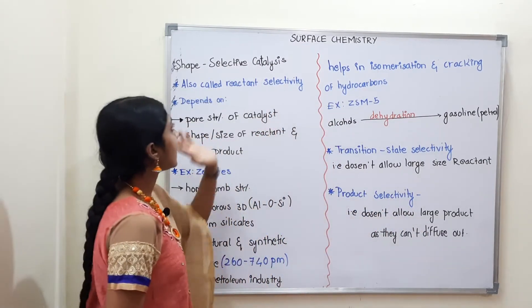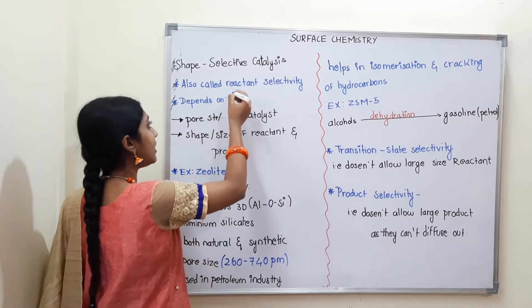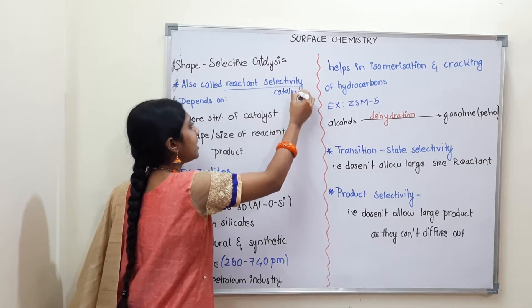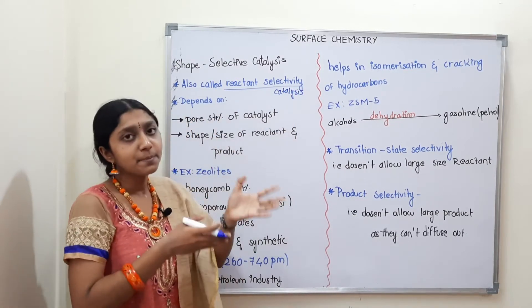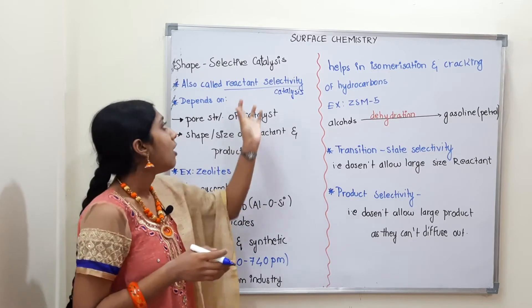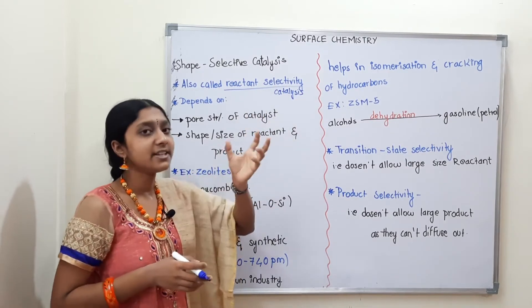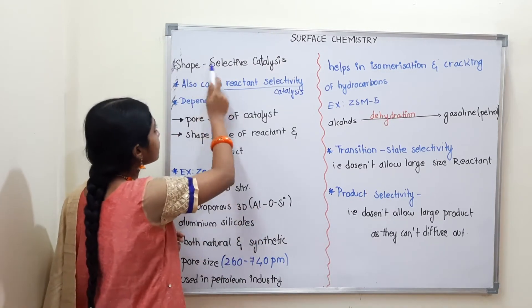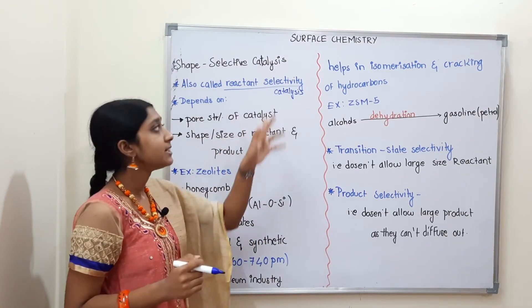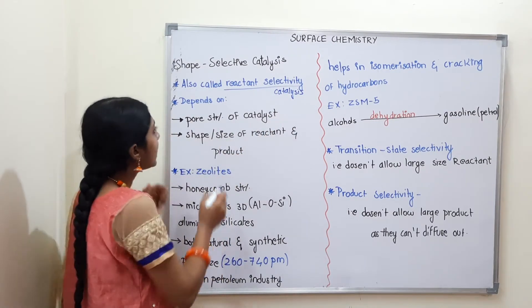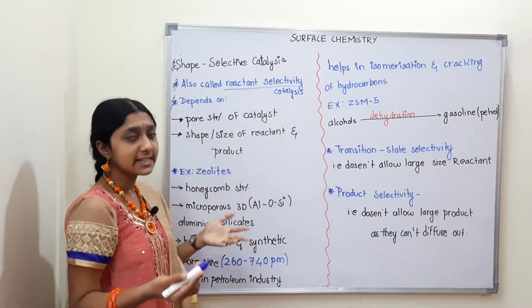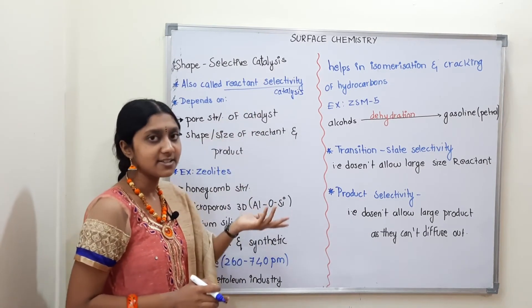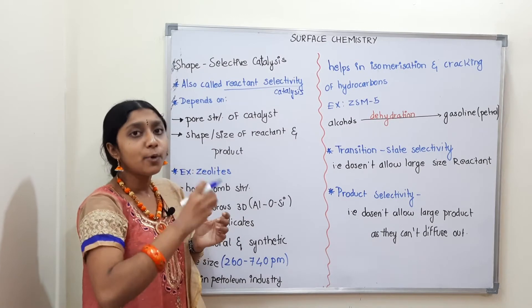Now, Shape Selective Catalysis. The type of catalysis is called reactant selectivity catalysis. It depends on the shape and size of the reactants. One of the key factors is the pore structure of the catalyst — the catalyst has a pore structure, meaning it has holes.